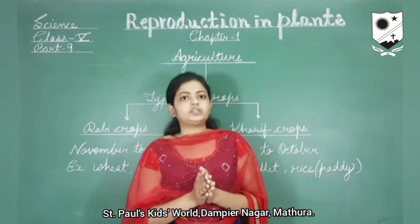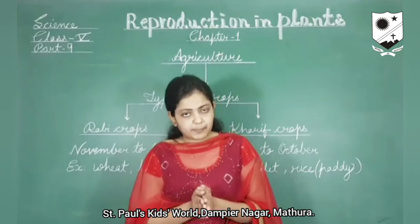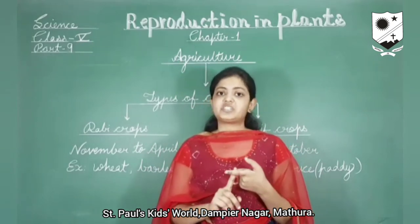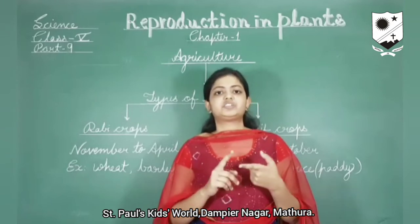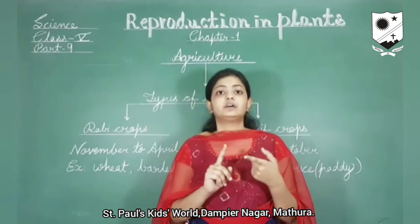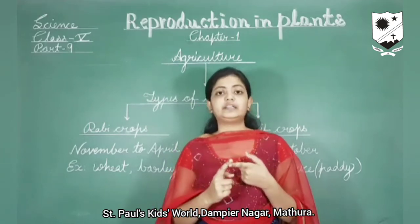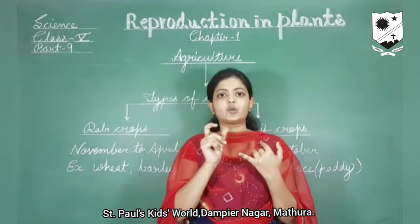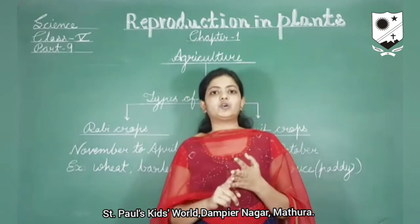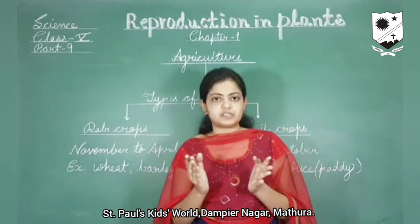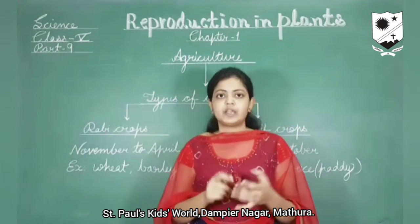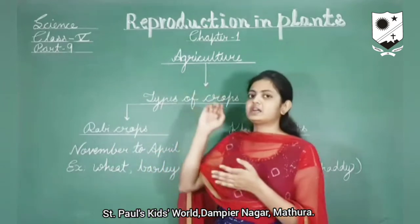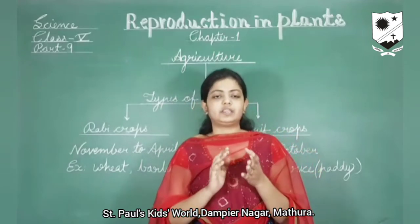Let us conclude what all topics we covered in this chapter. We discussed reproduction in plants: plants reproduce through seeds, through vegetative parts like roots, stems, and leaves — also known as vegetative propagation — and through spores. We studied the structure of a seed, the process of germination, the various agents of dispersal, vegetative propagation by different plant parts, and agriculture with the different types of crops grown in India.